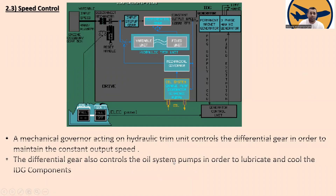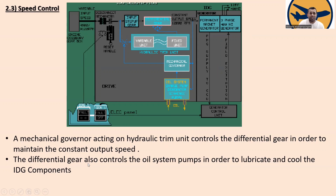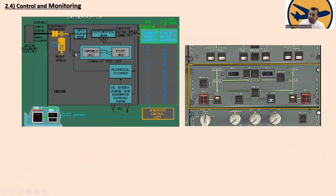For speed control, a mechanical governor acts on the hydraulic trim unit, which controls the differential gear in order to maintain the constant output speed. The differential gear also controls the oil system in order to lubricate and cool the IDG components.